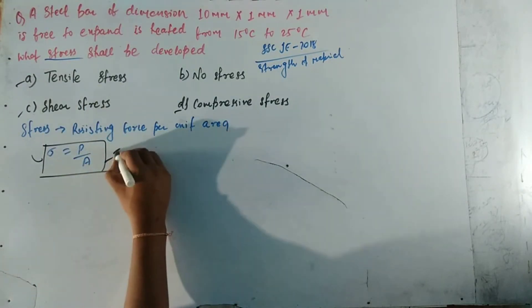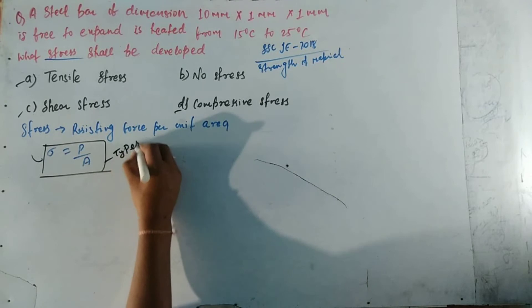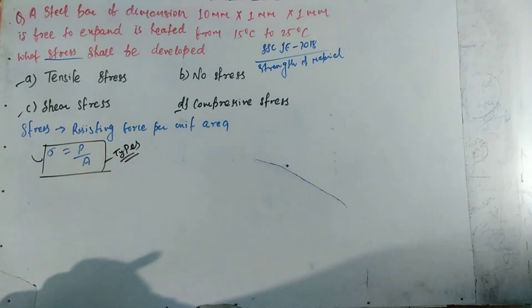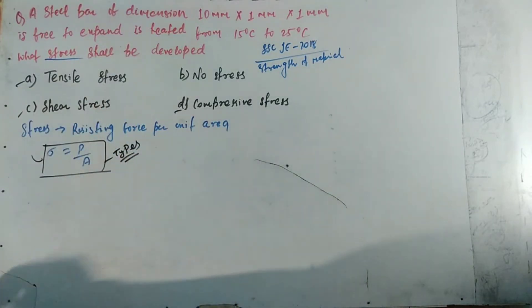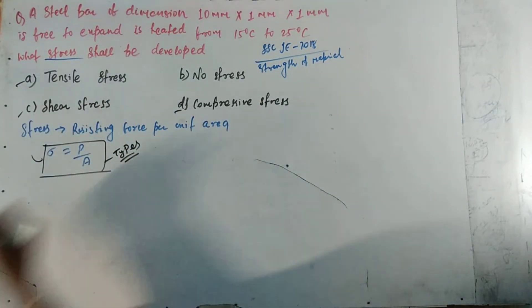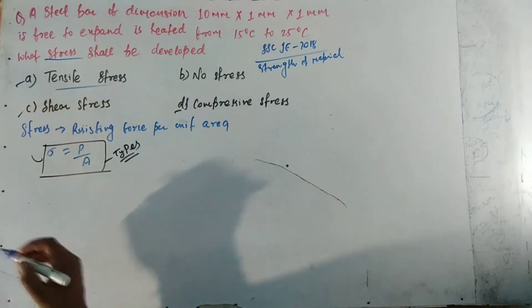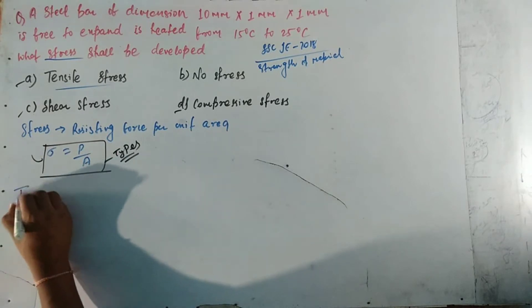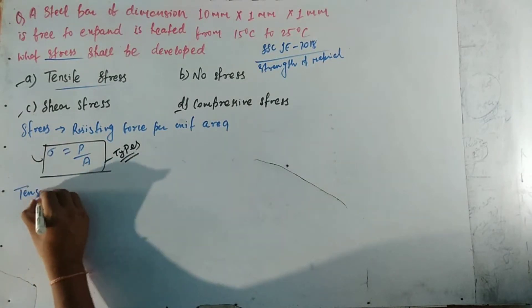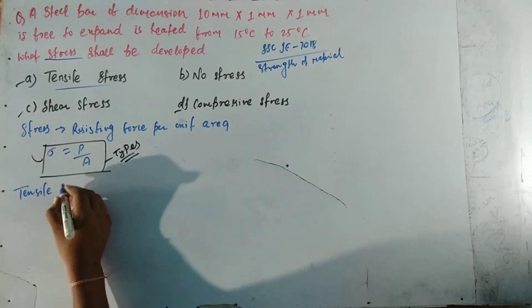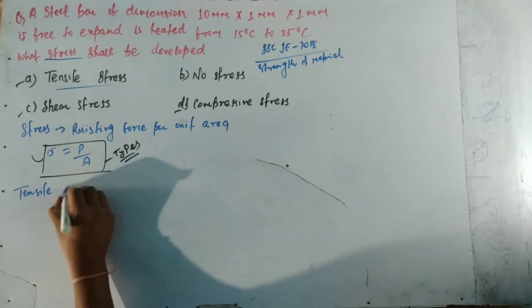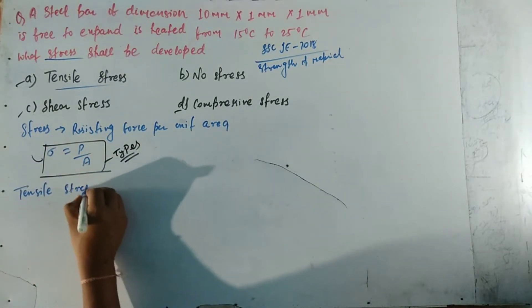So stress is resisting force per unit area. Options A, C, and D are the types of stress — that is, tensile stress, shear stress, and compressive stress.